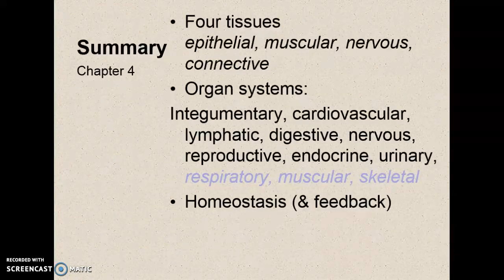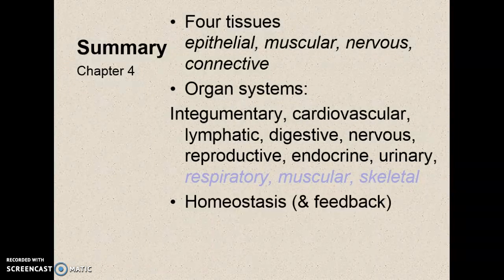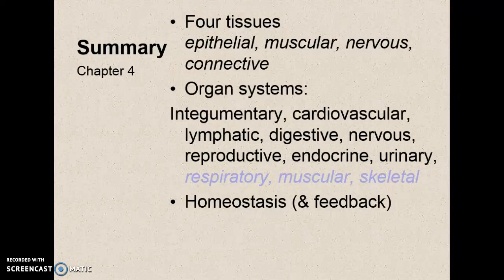In summary, the big picture for this chapter covers the four types of tissues — epithelial, muscular, nervous, and connective — and the different organ systems: integumentary, cardiovascular, lymphatic, digestive, nervous, reproductive, endocrine, urinary, respiratory, muscular, and skeletal. The big concept is homeostasis and the necessary types of feedback — negative and positive — involved in maintaining it. This is the end of chapter four and of unit one, which will be covered on exam one.